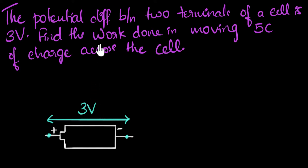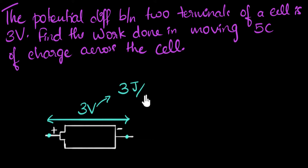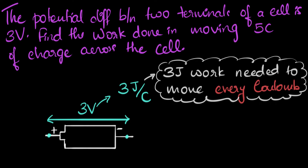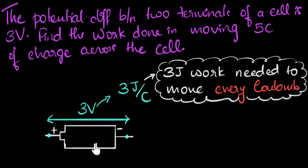To calculate work done from this number, we need to first understand what this number really means. As we have seen in a previous video, volt really means joules per coulombs. This is telling us that three joules of work is needed to move every coulomb of charge from one point to another — three joules per coulomb. That's what we mean by three volts.